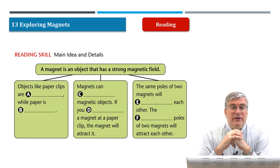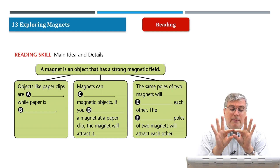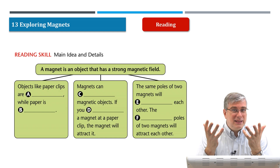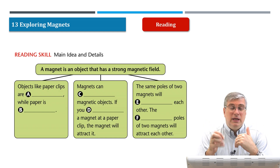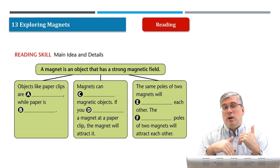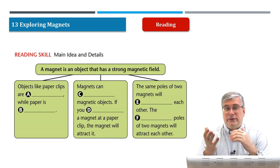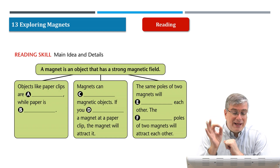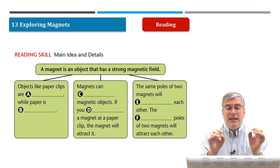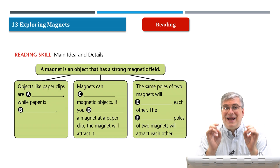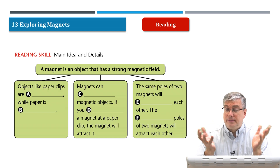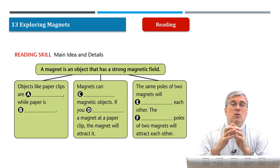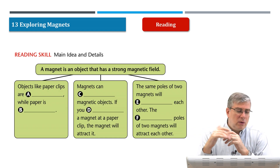So what is the main idea of this reading passage? The main idea is that you have a topic sentence and then you support that main idea with details. What is the main idea of this reading passage? The main idea is: a magnet is an object that has a strong magnetic field. That's a good statement to make, and now you want to back it up by giving examples.